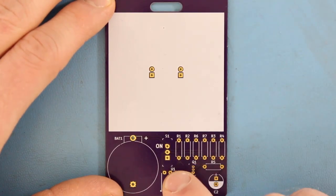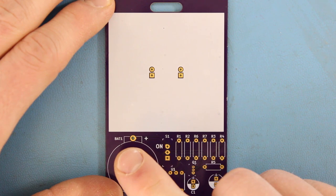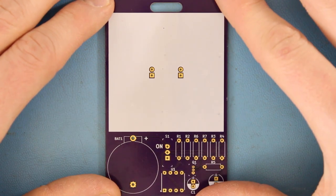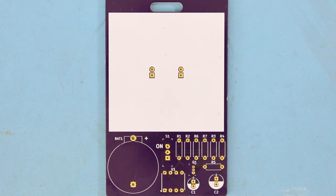Normally when I solder, I like to start with components in the middle of the board and work my way out. This allows you to get your iron in hard-to-reach places. However, for this board, we'll start with the shorter components and work our way to the taller components.